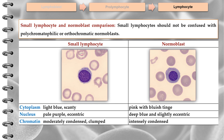Small lymphocytes should not be confused with polychromatophilic or orthochromatic normoblasts. Small lymphocytes usually have scanty pale blue cytoplasm, with a pale purple and eccentric nucleus showing moderately condensed or clumped chromatin. In comparison, polychromatophilic or orthochromic normoblasts have a pink cytoplasm with a bluish tinge. The nucleus is deep blue and slightly eccentric with intensely condensed chromatin.